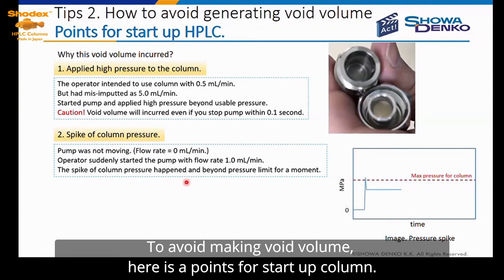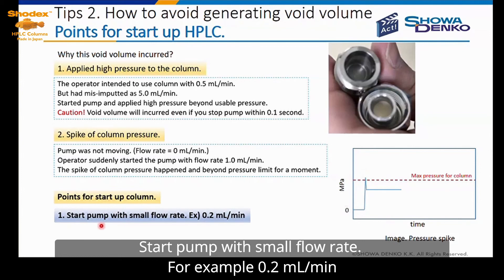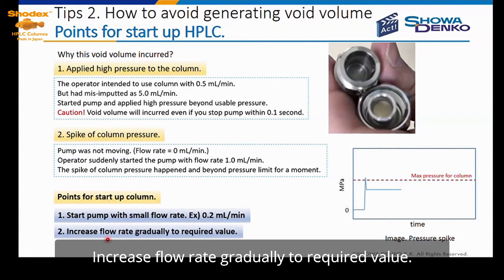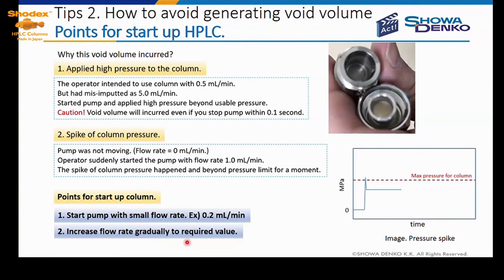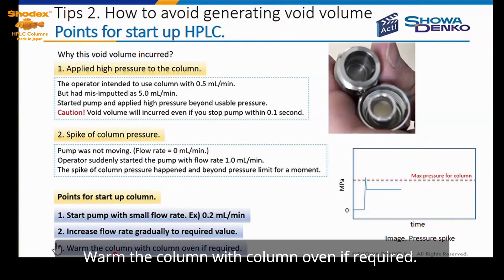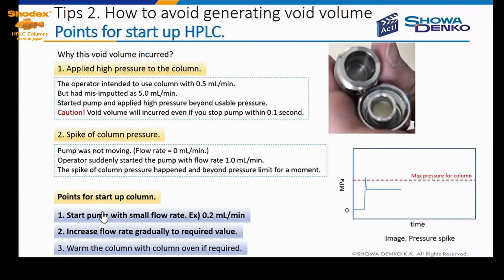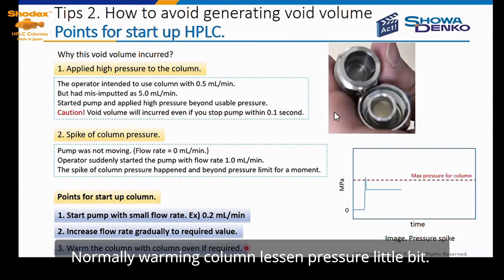Start the pump with a small flow rate — for example, 0.2 ml per minute — and increase the flow rate gradually to the required value. Warm the column if required, starting at 0.1 ml per minute.